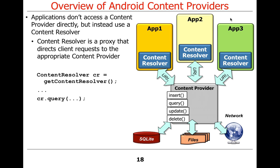Why does Android separate content providers from content resolvers? The flexibility allows different content resolvers to share a content provider. More importantly, it gives you the flexibility to have access span address spaces or security domains, providing additional opportunities for authentication and checking. There's also something called a client content provider that can optimize access by short-circuiting per-request authentication.